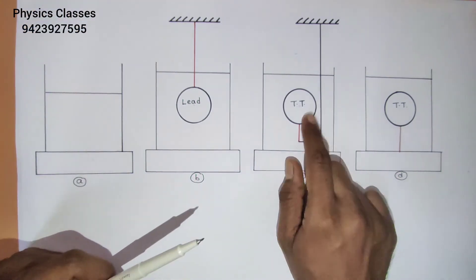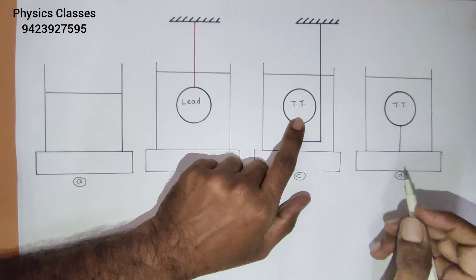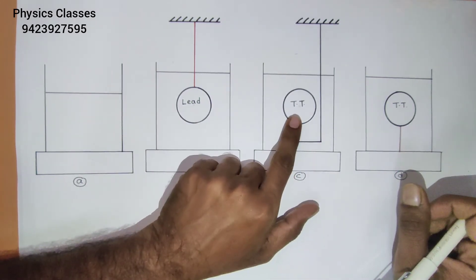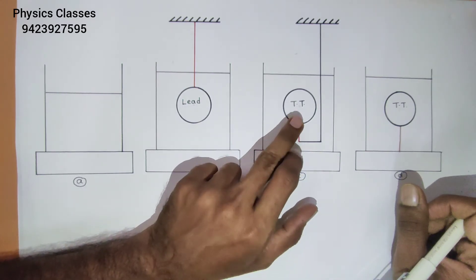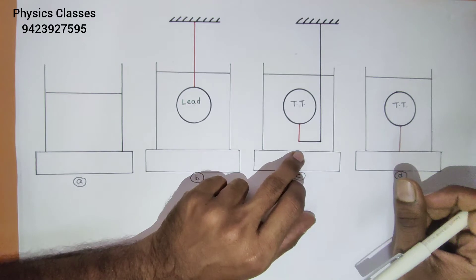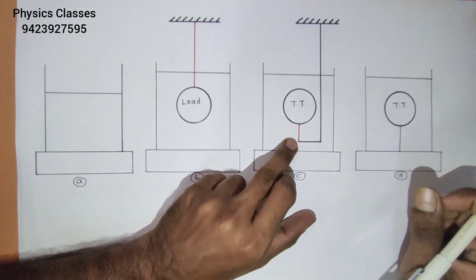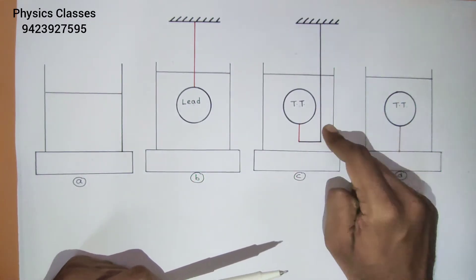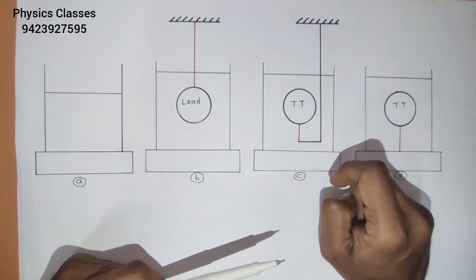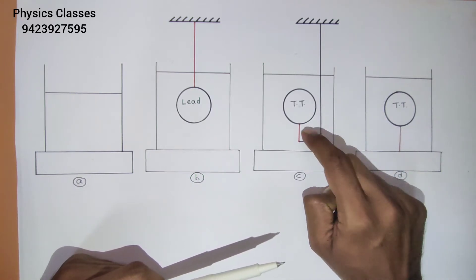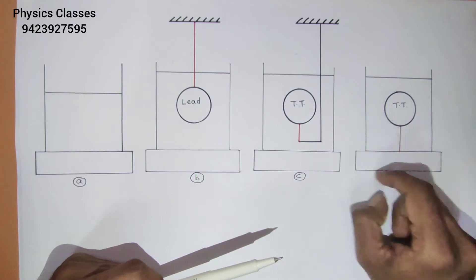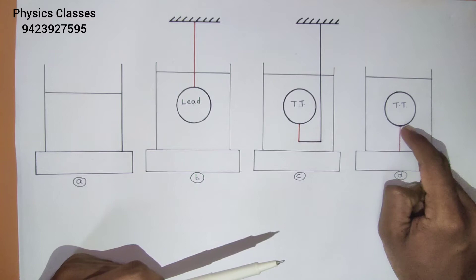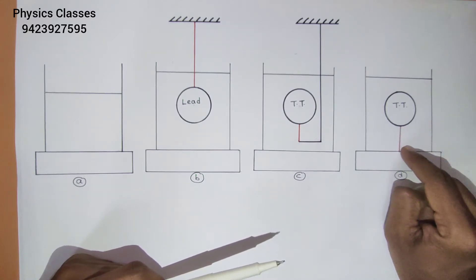In parts C and D, table tennis balls are immersed in the water. As the density of table tennis balls is lesser than that of water, to keep them immersed, strings are attached from the bottom of the ball to the rigid support. In part C, there is a rigid rod of the shape L, shown in black color, and the red color is the string. In part D, one end of the string is attached at the bottom of the ball and the other end is attached at the bottom of the container.